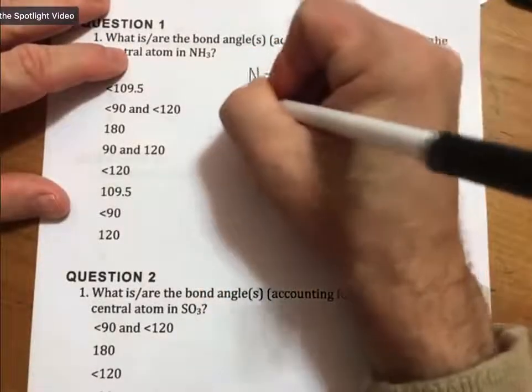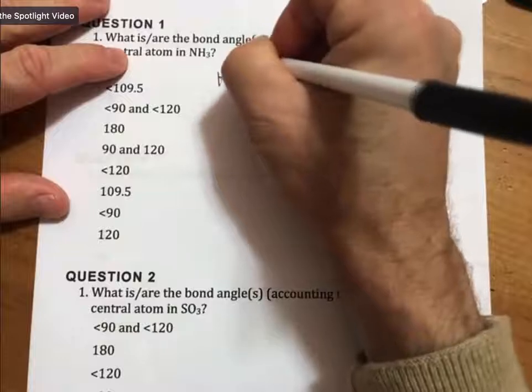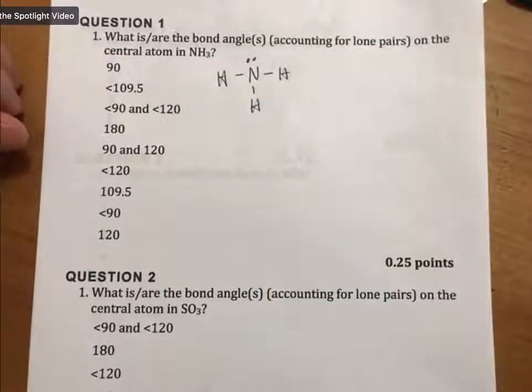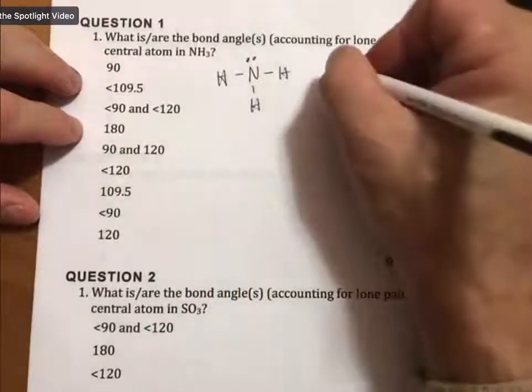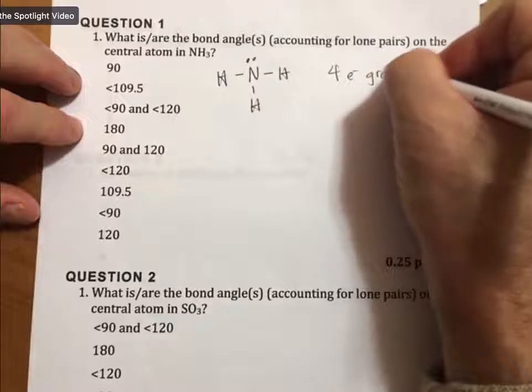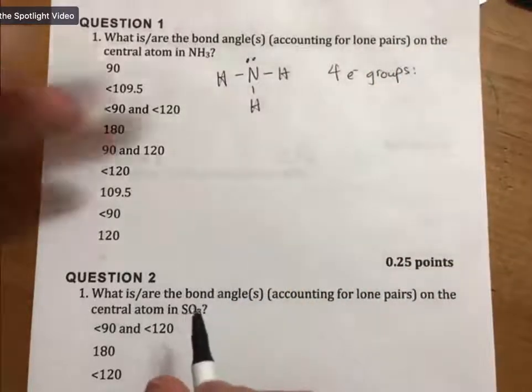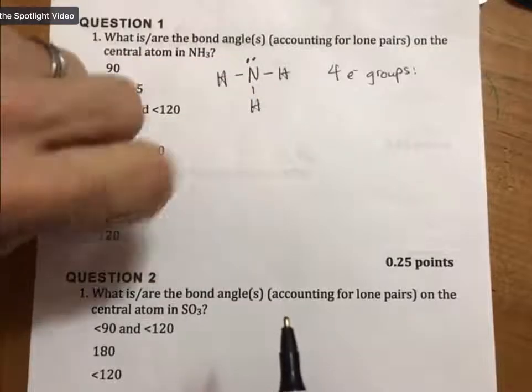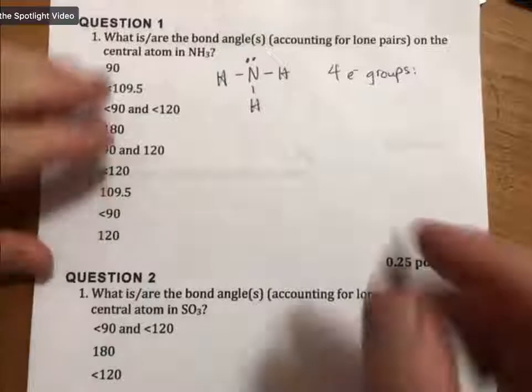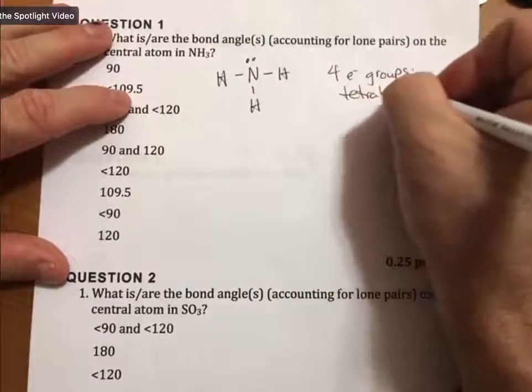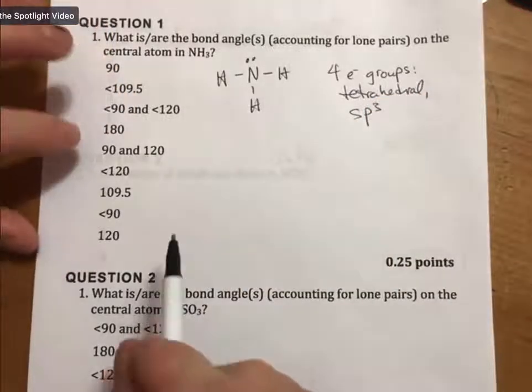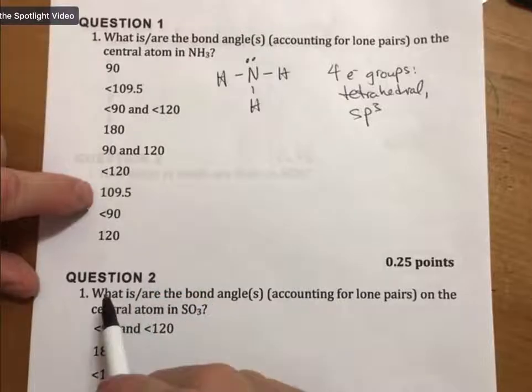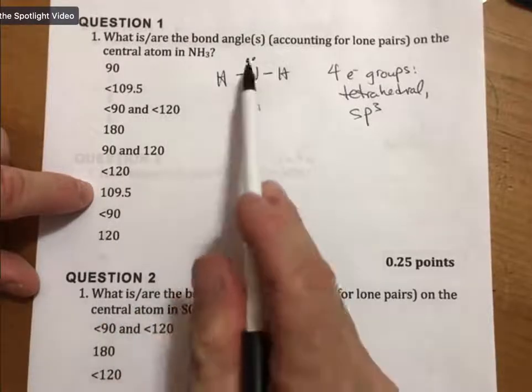I'm going to take a shortcut here. The Lewis structure for ammonia NH3 looks like this. When we look at the central atom, there are one, two, three, four electron groups, which means that we have tetrahedral electron geometry, sp3 hybridization, and bond angle of 109.5.